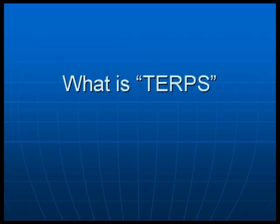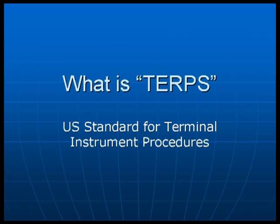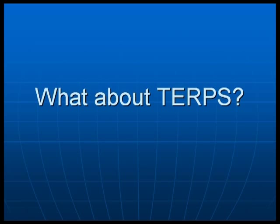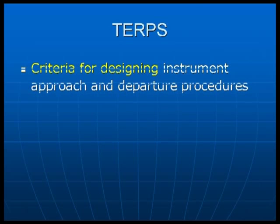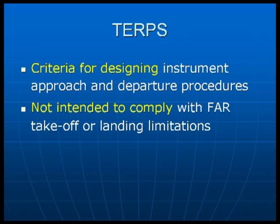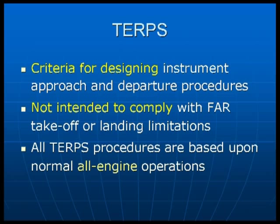Next, let's look at TERPS. TERPS is an acronym that stands for U.S. Standard for Terminal Instrument Procedures, otherwise known as FAA Handbook 8260.3B. Looking at Volume 1, the purpose of TERPS is criteria to formulate, review, approve, and publish procedures for instrument approach and departure of aircraft to and from civil and military airports. In summary, TERPS is criteria for designing instrument approach and departure procedures. TERPS is not intended to comply with FAR takeoff or landing limitations. And most importantly, all TERPS procedures are based upon normal all-engine operations.